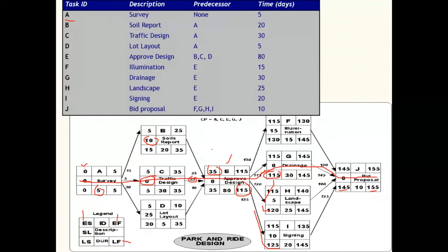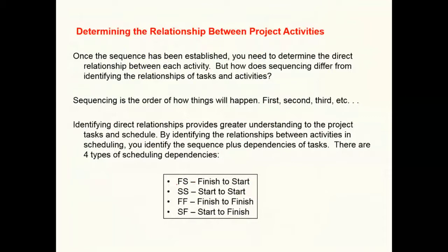Determining the relationship between different activities is a key task. Once the sequence has been established, you need to determine the direct relationship between each activity. There are four different types of sequencing to be familiar with: finish-to-start and start-to-start, which we just saw in the previous example, and the other two most common are finish-to-finish and start-to-finish.